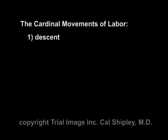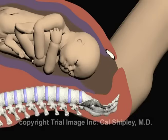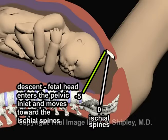The first of the cardinal movements is descent. Although technically the fetus is descending the entire time it is moving through the birth canal, descent as a cardinal movement is usually defined as the point at which the fetal head moves into the pelvis through the pelvic inlet at minus five station and descends toward the ischial spines.